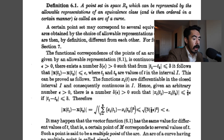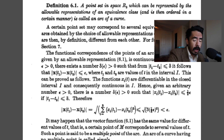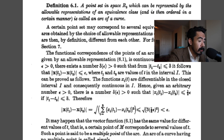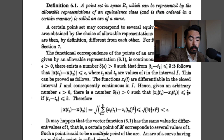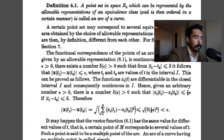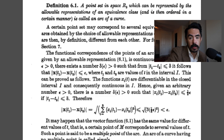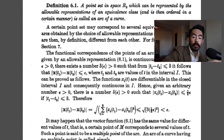Now the actual definitions: a point set in ℝ³ which can be represented by the allowable representations of an equivalence class and is ordered in a certain manner is called an arc of a curve. The ordering matters — the algebraic order property of the real numbers, where every element is positive, negative, or zero, is important here because without it your curve doesn't make sense. The functional correspondence of the points of an arc to values of t is continuous.